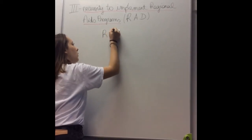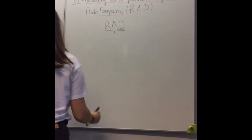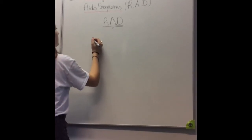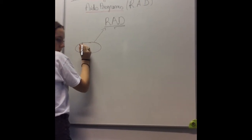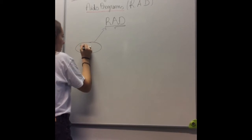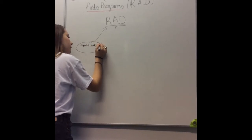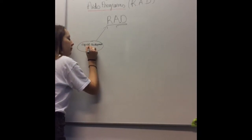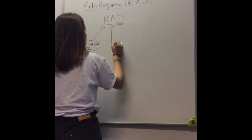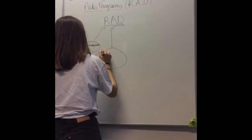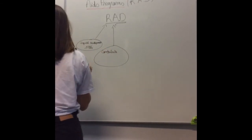Our third part is the necessity to implement regional aid programmes called RAD. The RAD is to promote equal development between all the regions of the European member countries in 1986. The goal of the RAD is to reduce inequalities between the European member countries and regions of these countries.